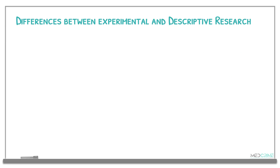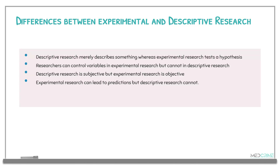What are the differences between experimental and descriptive research? Descriptive research merely describes something, whereas experimental research tests a hypothesis. Researchers can control variables in experimental research but cannot in descriptive research. Descriptive research is subjective, but experimental research is objective. Lastly, experimental research can lead to predictions, but descriptive research cannot.